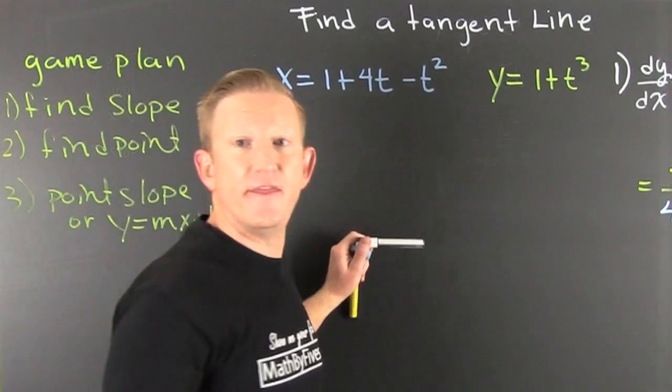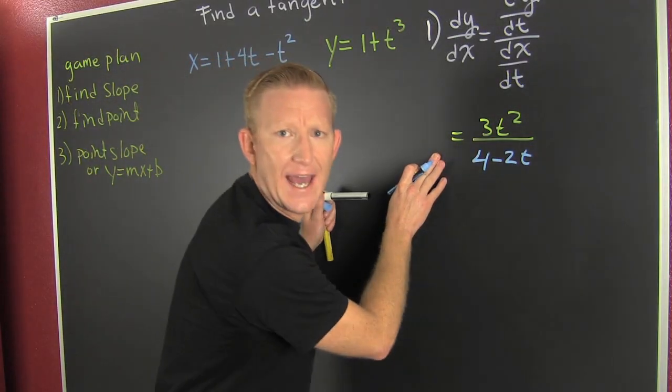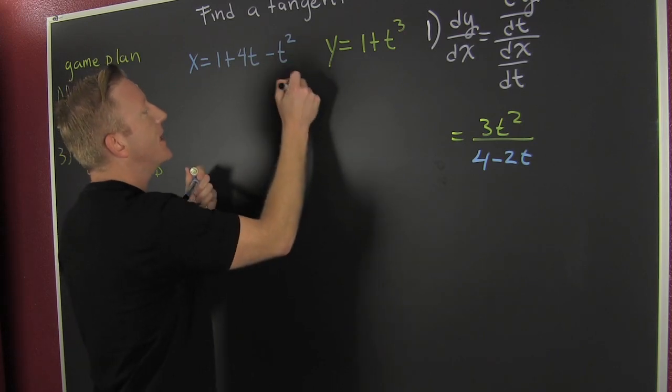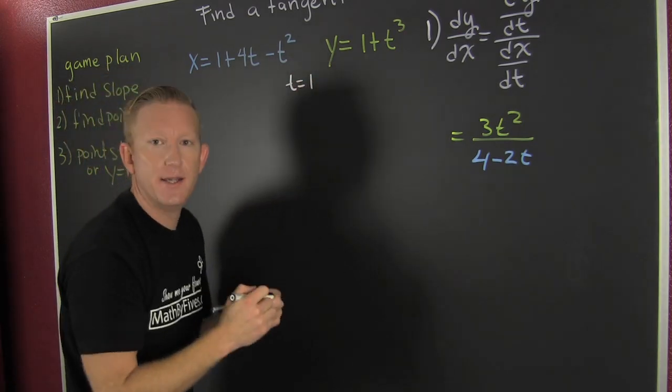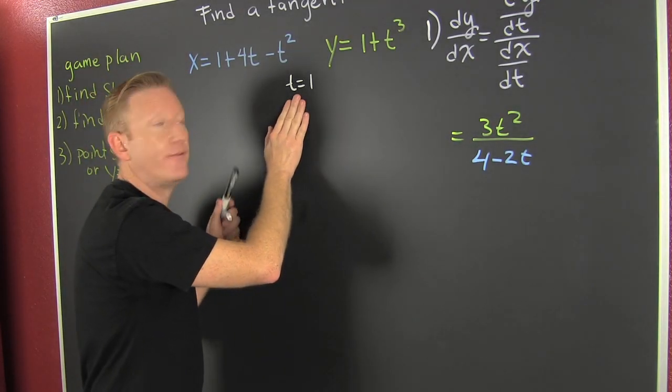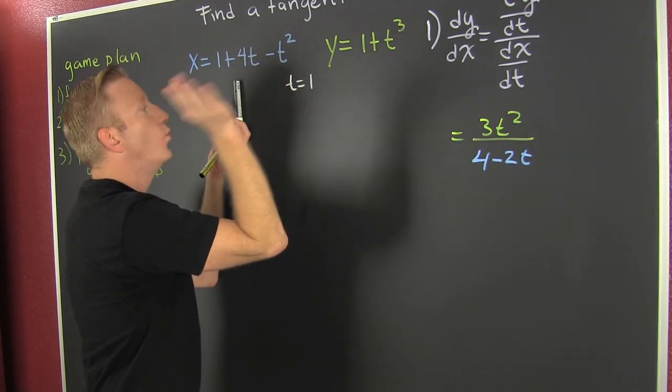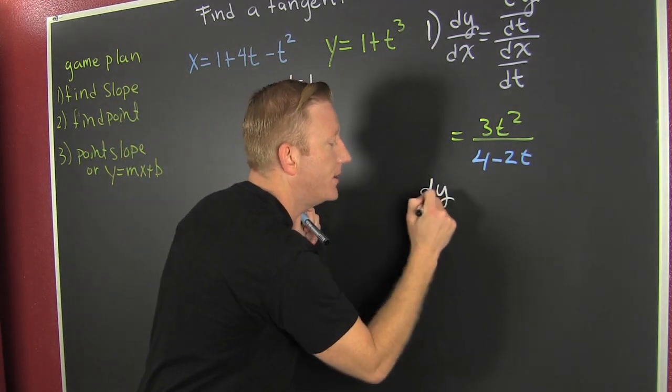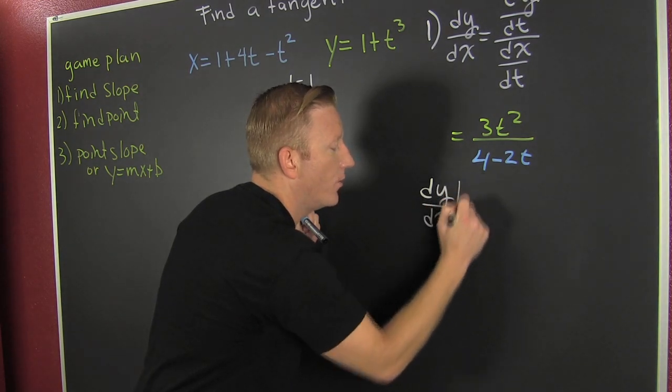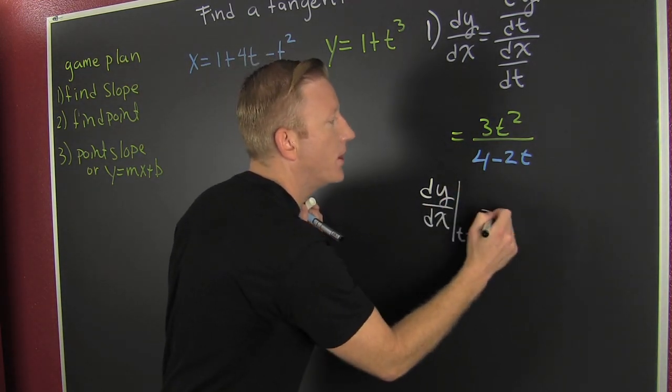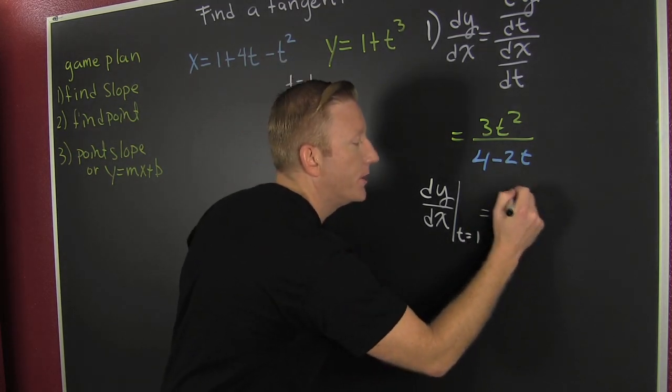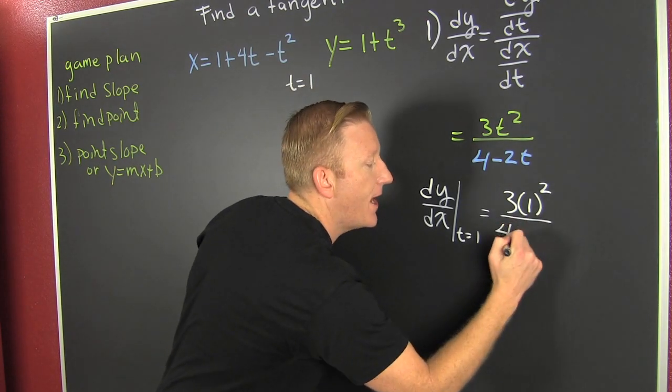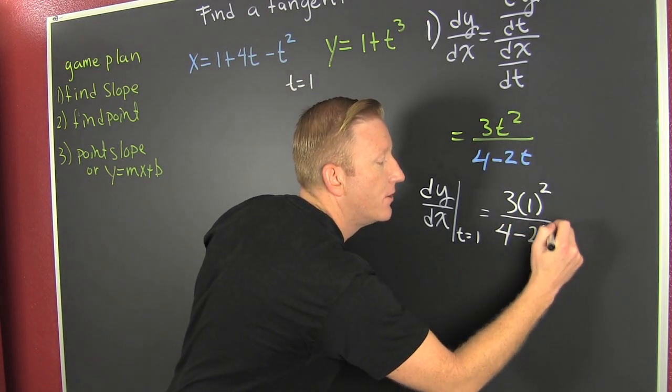Now that we have found that slope, we need to go and evaluate it at the t value. But what I neglected to write is that t is equal to 1. Nice numbers. Now, we're trying to find the equation of a tangent line for this parametric function when t is equal to 1. So we need to evaluate dy dx where t is equal to 1. So I'm going to plug it in.